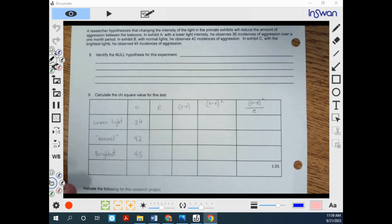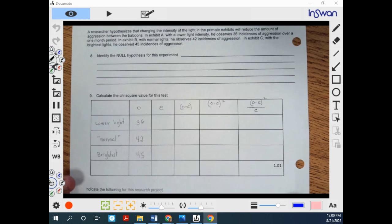Now, if you asked a typical person, did changing light affect the number of incidences of aggression, I would say most people would say yes. And the brighter the light, the more incidents they would have. So we're going to see if that is in fact true by calculating this chi-square.